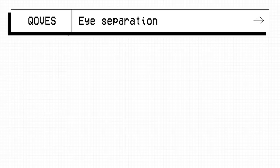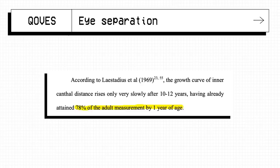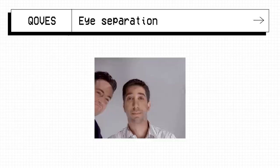One of the reasons why this is such a sensitive facial feature that people notice is because 78% of the adult eye spacing is determined by 1 year of age and increases very slowly from there on out, meaning that not only is it determined from birth, but also an ecologically honest indicator of genetic quality.